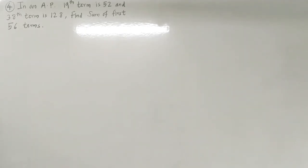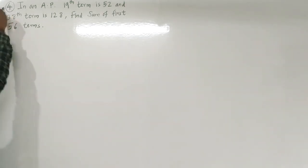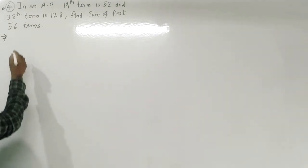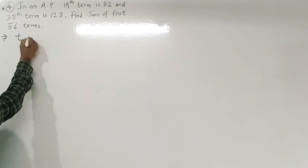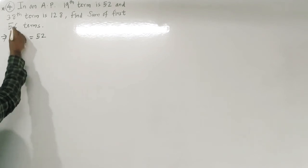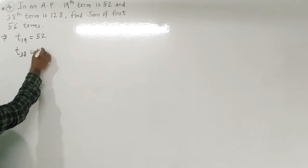Fourth example: in an AP, the 19th term is 52 and the 38th term is 128. Find the sum of the first 56 terms. Given: T19 = 52 and T38 = 128; we need to find S56.